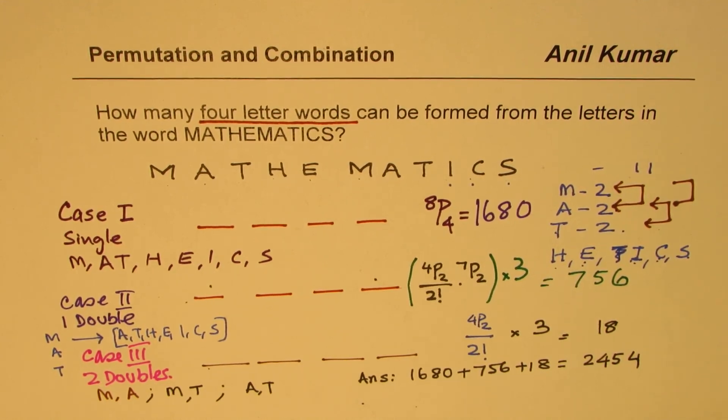My suggestion is you could also try solving this question using combinations. So that'd be interesting. But I hope you understand how we could actually find four letter words from the given word mathematics. So you need to split it into cases to solve such questions. We do not have three letters in it. Otherwise, we could have more cases. So that is how it should be done. I hope that helps. Feel free to write your comments and share your views. If you like and subscribe to my videos, that'd be great. Share my videos with your friends. Thank you and all the best.